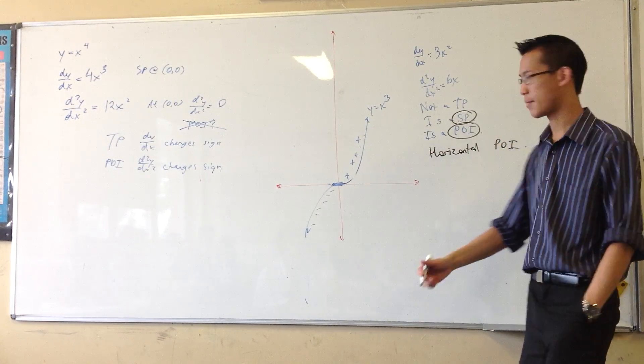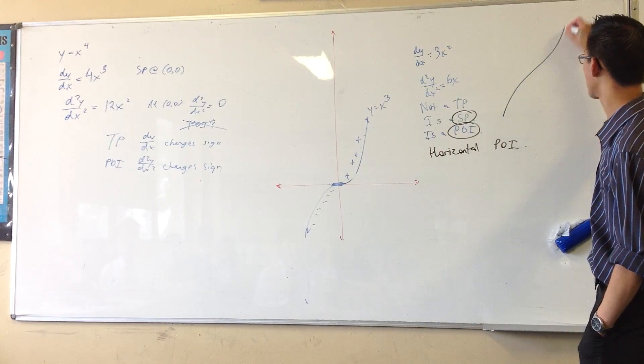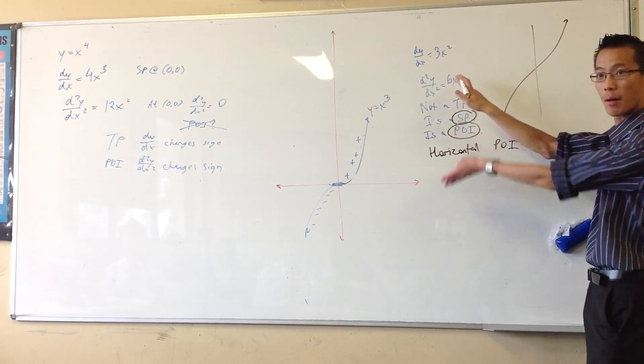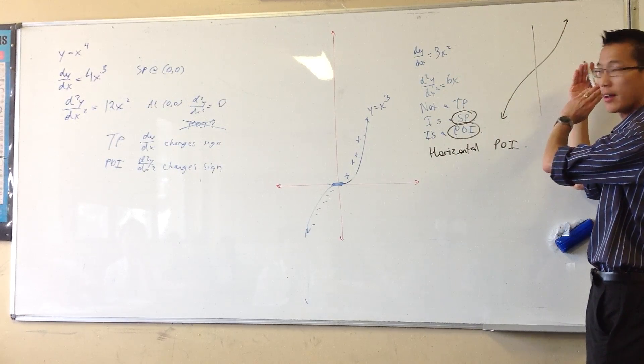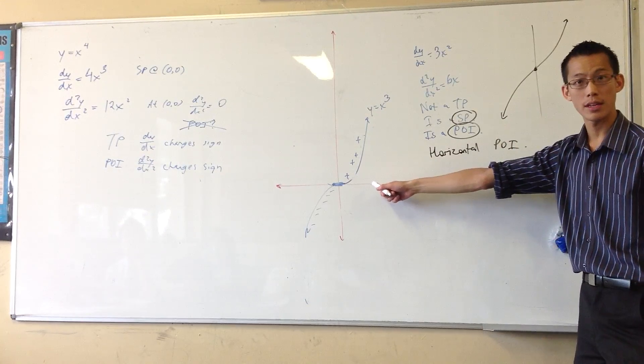Because the points of inflection we looked at before, like x cubed plus x, looks kind of like this, right? You can still see the concave down part and the concave up part. But at that point there, it's not horizontal, right? But this one is, okay?